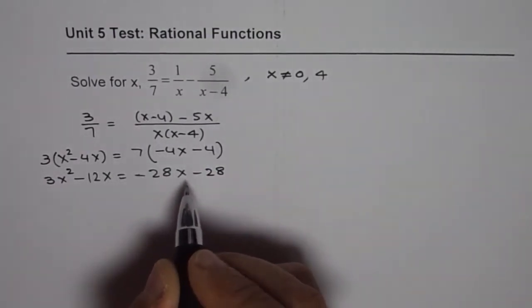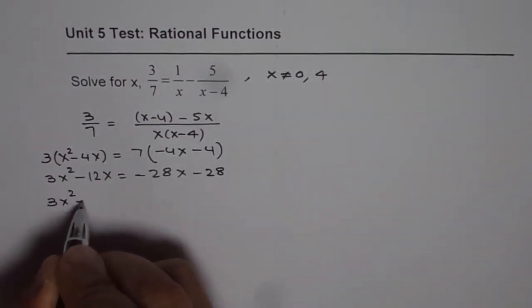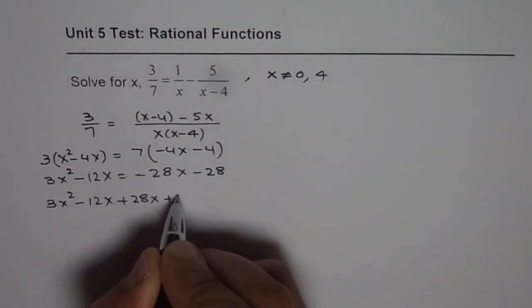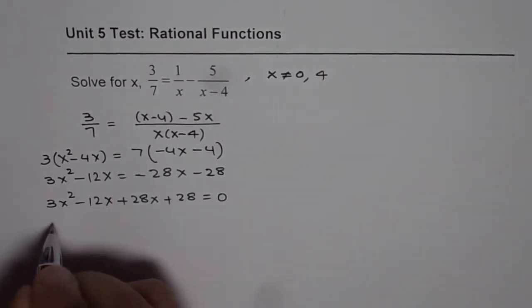Bring them all to the left side. So we have 3x square minus 12x plus 28x plus 28 equals 0. Combine the like terms.